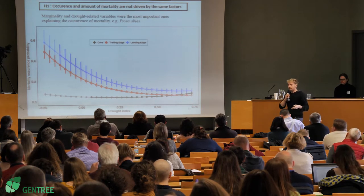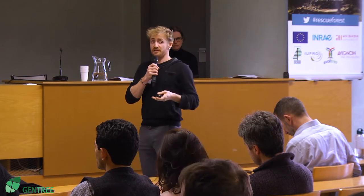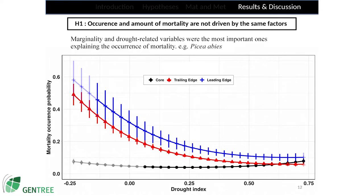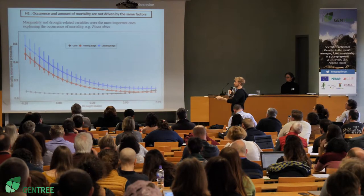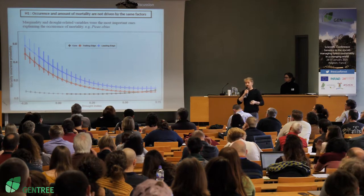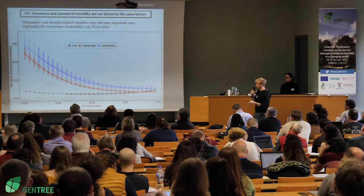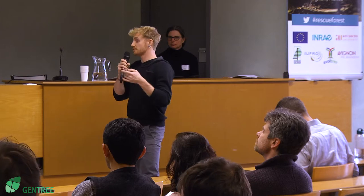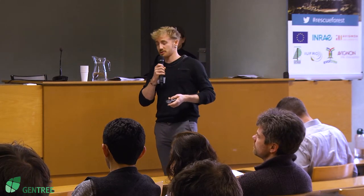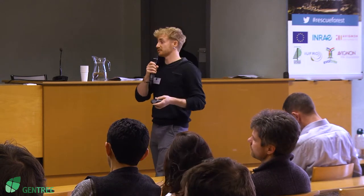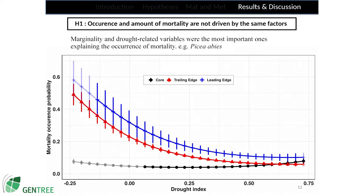I'm going to present the main tendency I observed in my data — this is the result for one single species, but this is the main tendency I observe for my 20 species. When we look at mortality occurrence probability as a response to drought — more negative values in the drought index means drier conditions — we see that for trailing edge and leading edge populations, in the same dry conditions, we observe more mortality than core populations. Drought was the most important driver of occurrence of mortality.